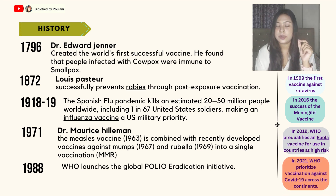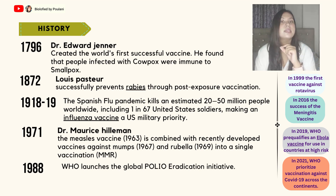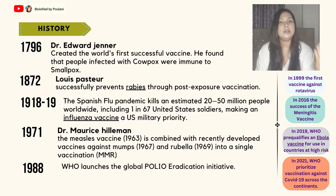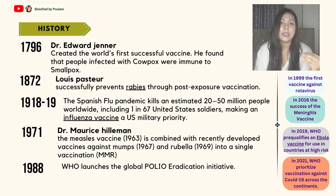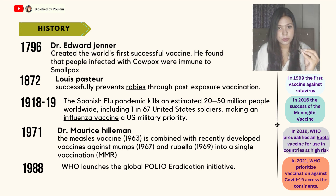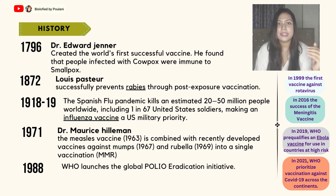In the year 2021, the World Health Organization prioritized vaccination against COVID-19 across the continent. COVID-19 is a very recent case — due to double, booster, or triple vaccines — Covishield, Covaxin, or whichever vaccine anyone received — almost everybody in our country is now vaccinated and protected against COVID-19. This is the history of vaccination, and I want you to have at least a brief memorization of all this.